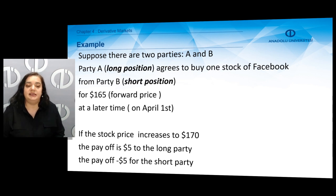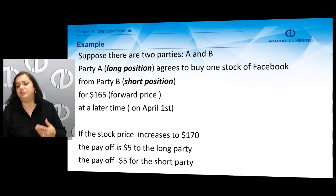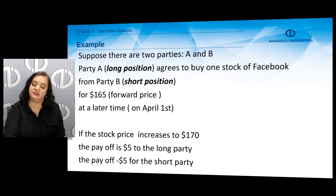If the stock price increases to 170 dollars at maturity, the payoff or profit of the long party is five dollars. Instead of paying the market price, the long party — who bought the forward contract — can purchase the stock at the lower price of 165 dollars as determined by the forward contract. So the payoff is five dollars for the long party and minus five dollars for the short party, because the market price is higher than the forward price for the seller.